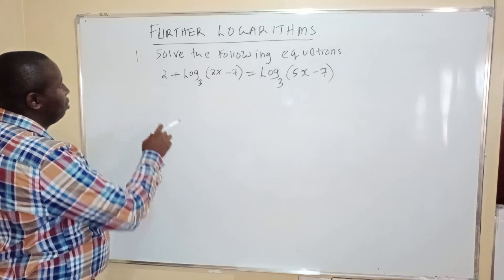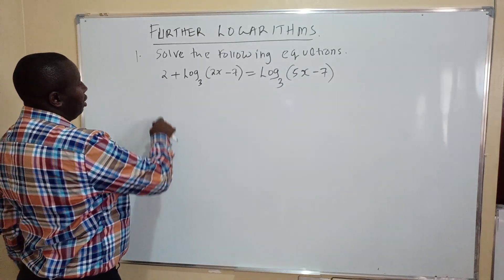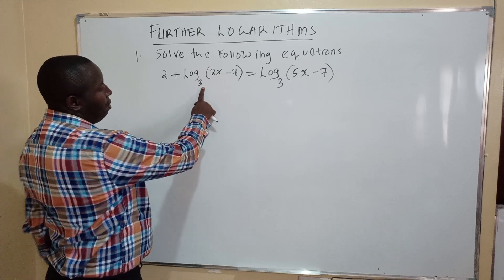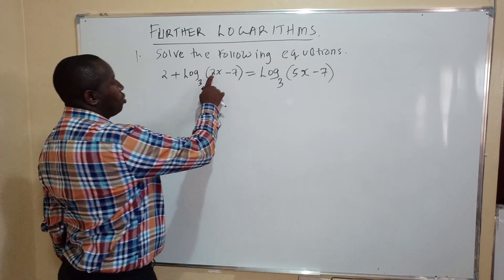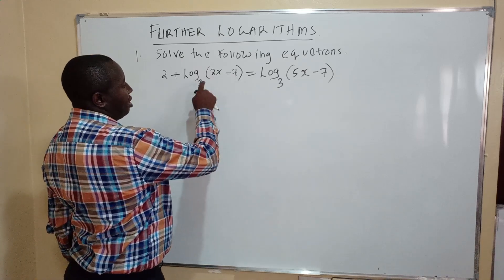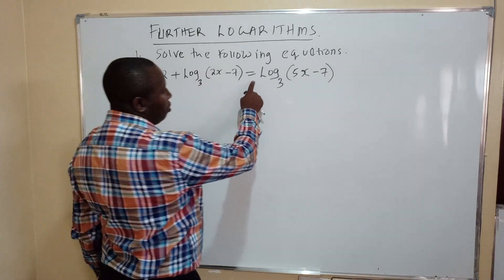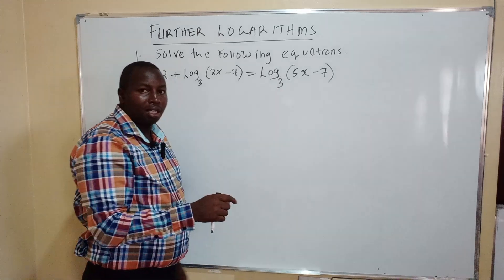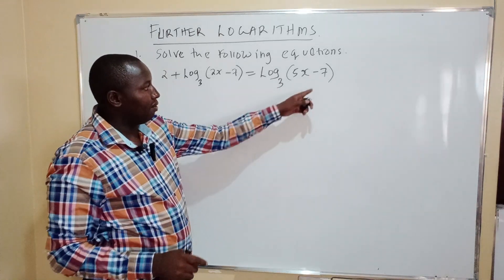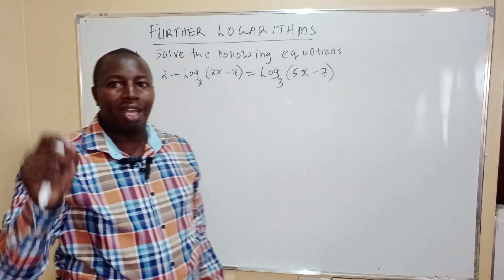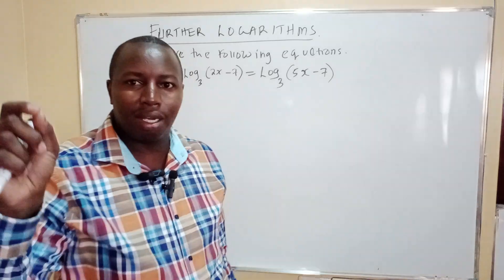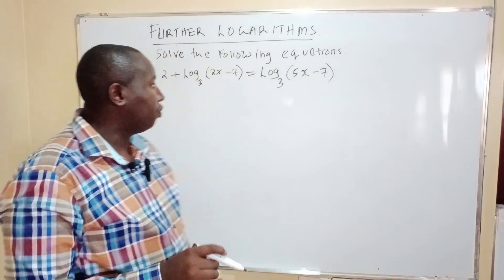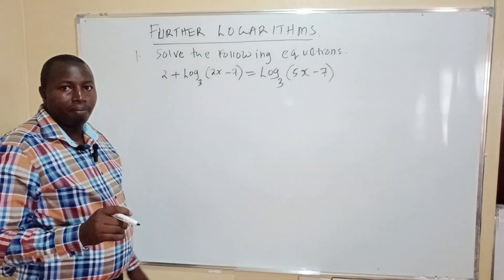The question we are given is: 2 plus log base 3 of (2x minus 7) is equal to log base 3 of (5x minus 7). That is the question provided, and we want to solve for the value of x.